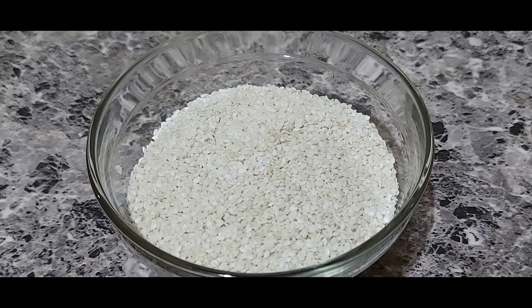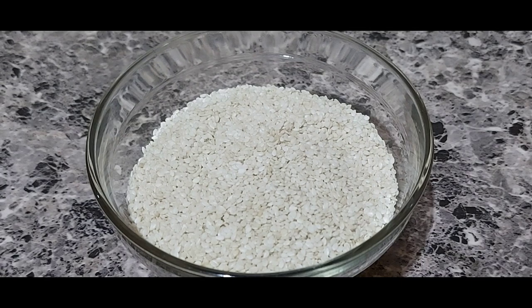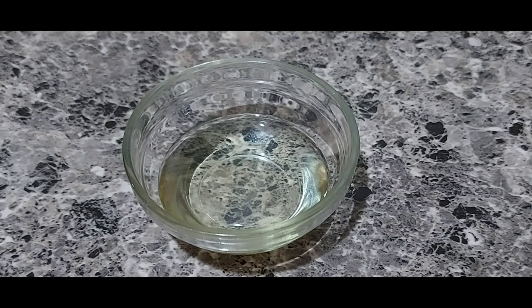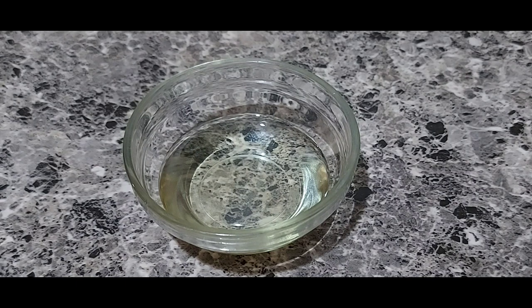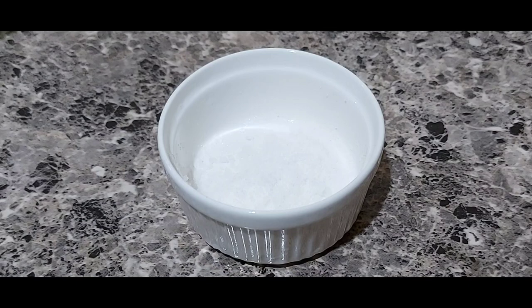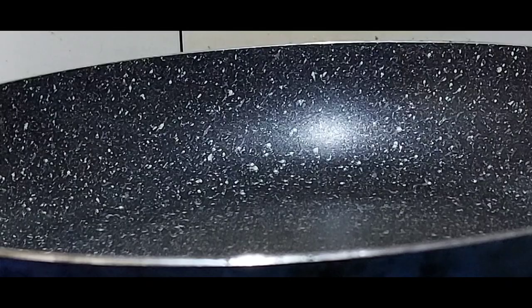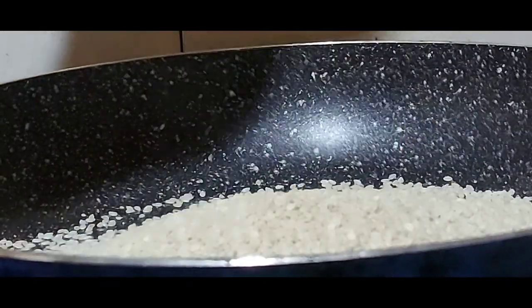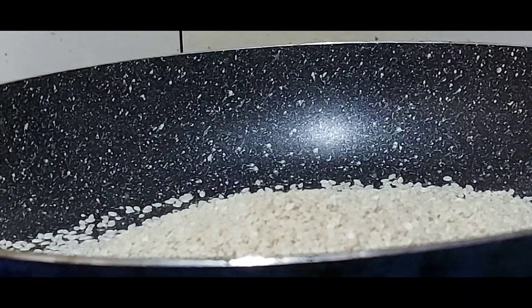Making tahini, we need a cup of sesame seeds, 2 to 4 tablespoons of canola oil, and salt. In a pan over low to medium flame, we're going to saute the sesame seeds for 3 minutes. We need the color to change and it releases a very nice aroma.